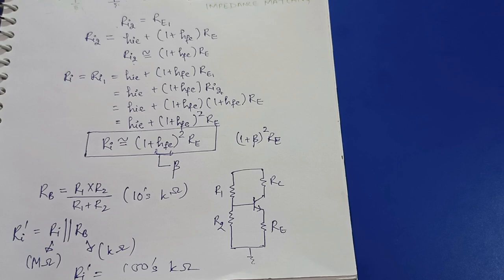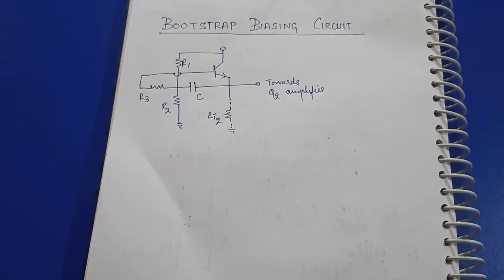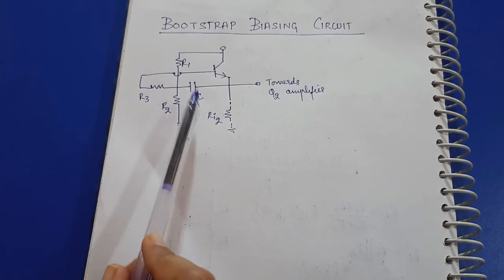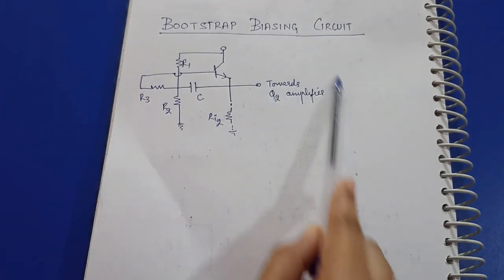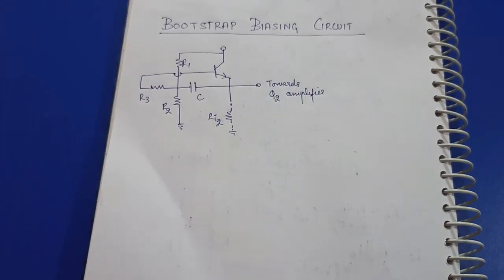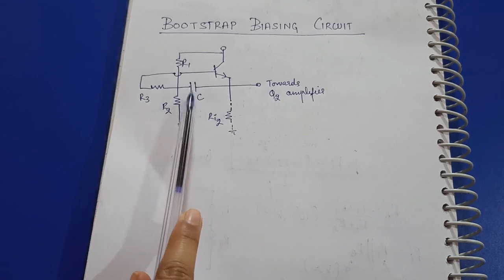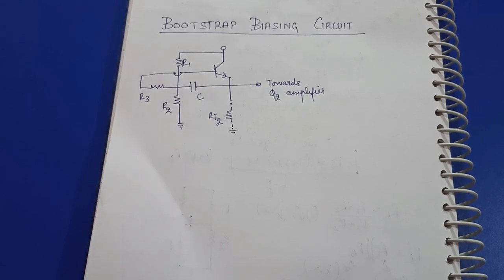Instead, we use the bootstrap biasing circuit in the Darlington amplifier. This is the circuit diagram for the bootstrap biasing circuit. It uses three resistances followed by a capacitor, along with the Q2 amplifier. I am showing only the first part here because we are discussing only the biasing circuit, not the whole Darlington configuration.